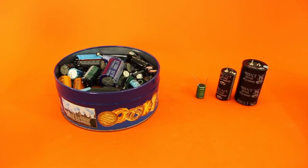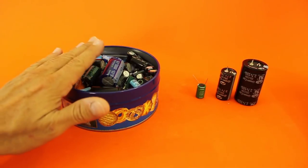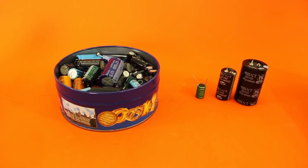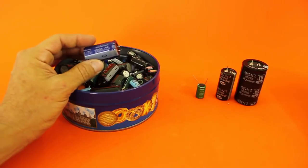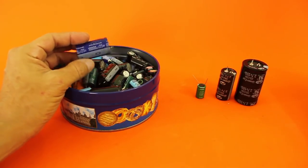Normal electrolytic capacitors such as these ones have capacitance in the order of microfarads, that is one millionth of a farad. This for example, which is a large one, is of 10,000 microfarads.